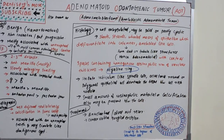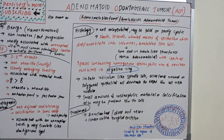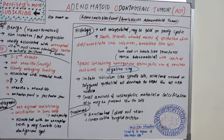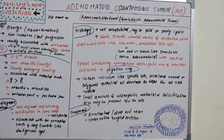AOT is the fourth most common odontogenic tumor. It can be divided into two variants: central (intraosseous) and peripheral (extraosseous). The central intraosseous type has two subtypes: follicular and extrafollicular. The follicular type is associated with an impacted tooth and is the subtype most commonly confused with a dentigerous cyst.